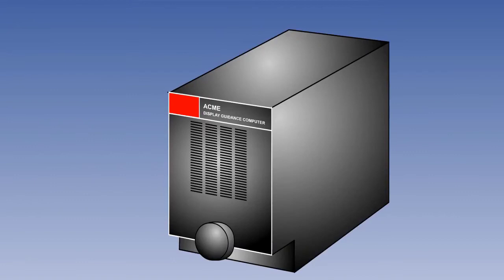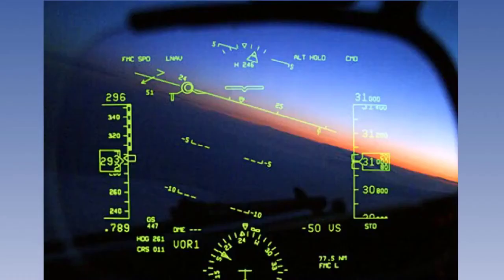The display guidance computer takes the flight guidance information and symbol generation data from the EFIS and combines it in a form suitable for the HUD display. The generic term for the symbols generated is symbology, and it looks like this.